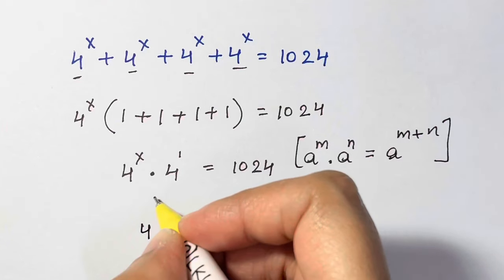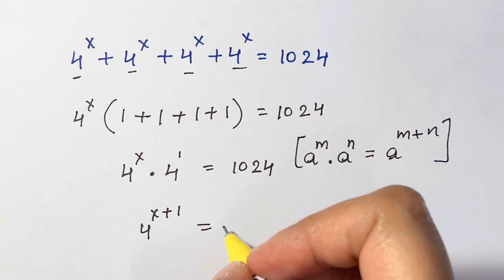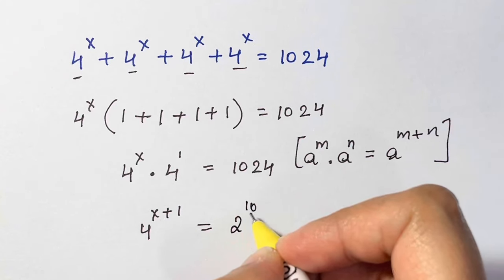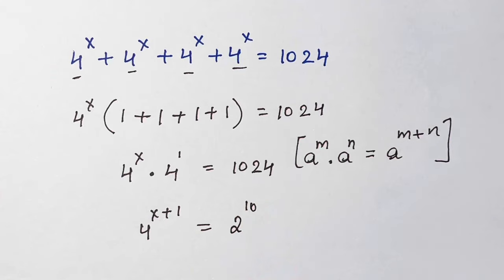4 to the power of x plus 1 is equal to what's 1024. That's 2 to the power of 10. When you multiply 2 times 2 times 2 times 2, that is 10 times, you get 1024.